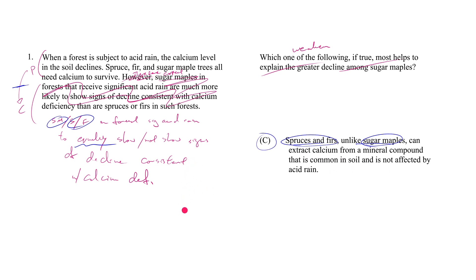But like I said, it's not the only way to weaken this argument. Do you recall the other hypotheses we came up with? Any one of them could have worked as well. You could have said answer choice D—here's another answer choice that works: sugar maples just happen to get a higher dose of acid rain.